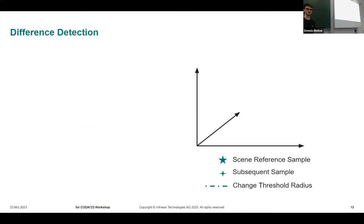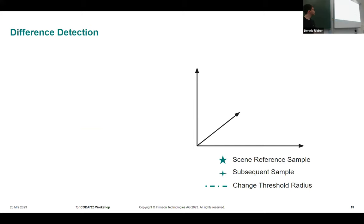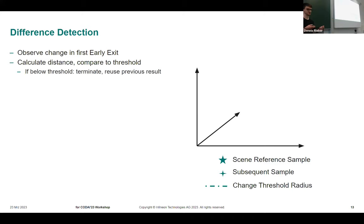For the temporal equations, I want to start with difference detection, which was our first simple approach to that design. For that approach, we are only observing the change in the first early exit, always that early exit. We are calculating the distance between that output - it's a classification task, it's a vector space - and a reference output from a previous sample. If there's a distance below the threshold, we will just terminate. We don't execute the deeper layers and we will go with the previously created result. Otherwise, we have to run the full inference and get a new result. We don't use the direct predecessor as a reference, as we want to avoid having small accumulation of smaller changes that lead to a complete change in the environment without retriggering the inference.